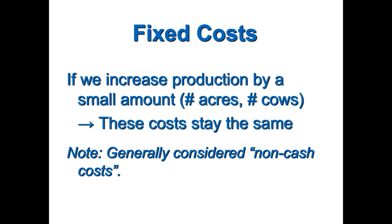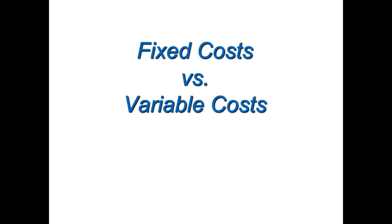Good examples of fixed costs include equipment depreciation — that's the biggest one. Related to that and easy to forget is interest: if you've got a quarter million dollars in equipment, even if you self-financed it, you still have interest on that equipment. There are other fixed costs too — farm insurance, property taxes — but by far the ones we're going to be most concerned about are depreciation and interest on that equipment.